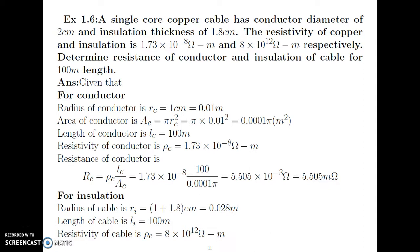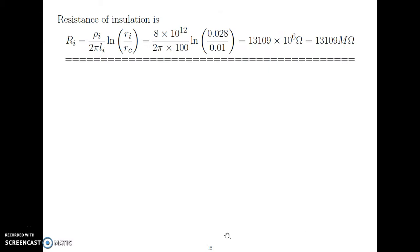To calculate the insulation resistance, it is necessary to determine the radius of the cable. The radius of the cable equals the radius of the conductor plus the insulation thickness: 1 cm plus 1.8 cm equals 2.8 cm, that is 0.028 meter. Length is 100 meter and resistivity of insulation ρi is 8 into 10 raised to 12 ohm meter. The formula for insulation resistance is Ri = ρi / (2π × Li) × ln(Ri / Rc).